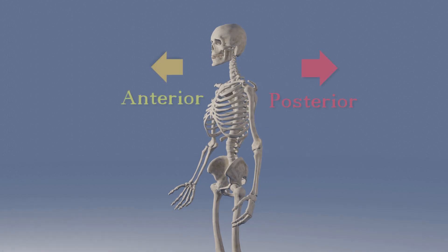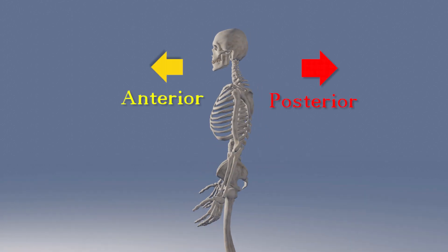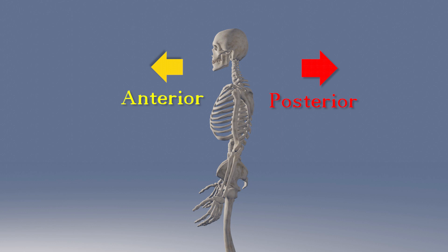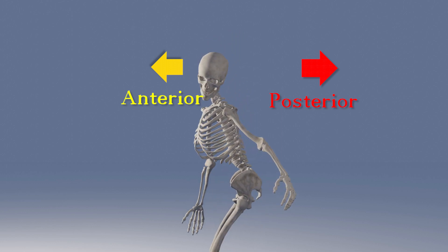Anterior and posterior refer to the front and the back. The face is on the anterior portion of the head. The buttocks are sometimes referred to as the posterior, because they are in the back or behind portion of the body.